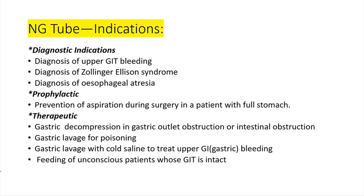For prophylaxis, the NG tube is used to prevent aspiration of gastric content by emptying the stomach. Therapeutic uses include gastric decompression in gastric outlet obstruction or intestinal obstruction, gastric lavage for poisoning, gastric lavage with cold saline to treat upper GI bleeding, feeding of unconscious patients whose GIT is intact, and administration of drugs.